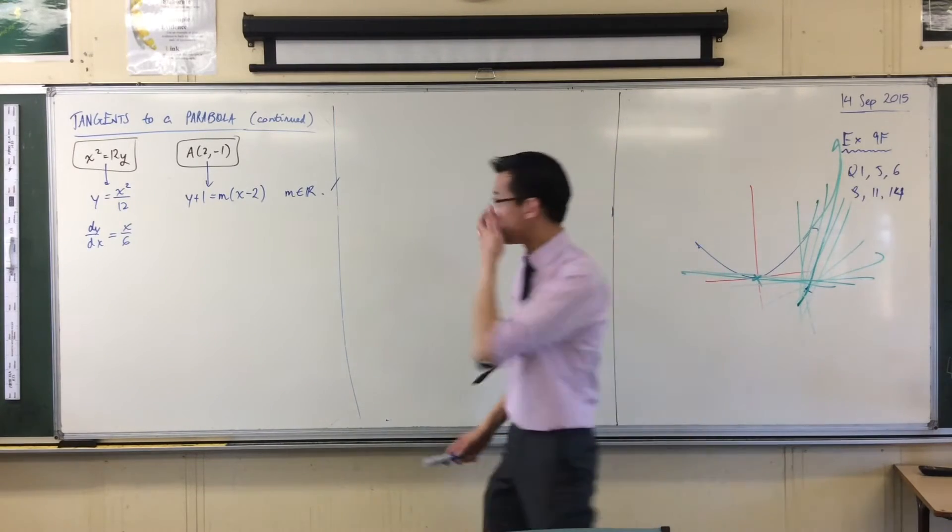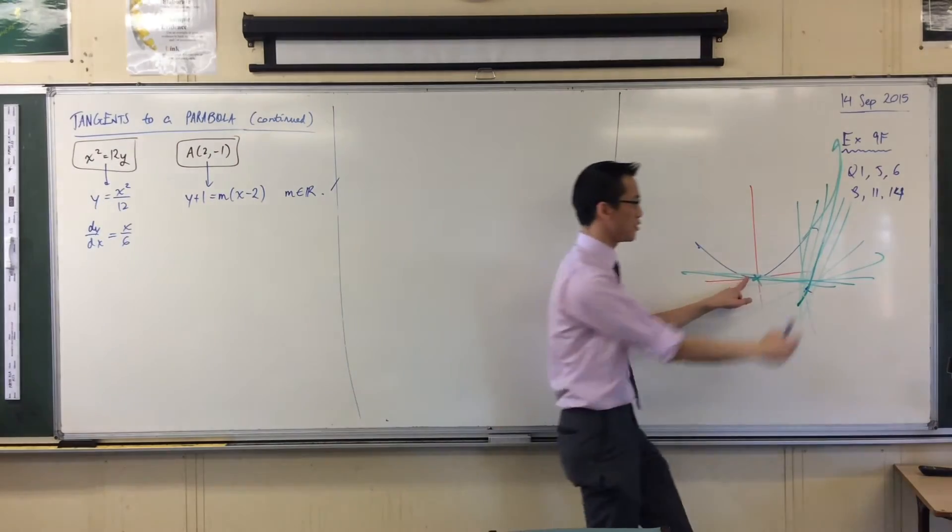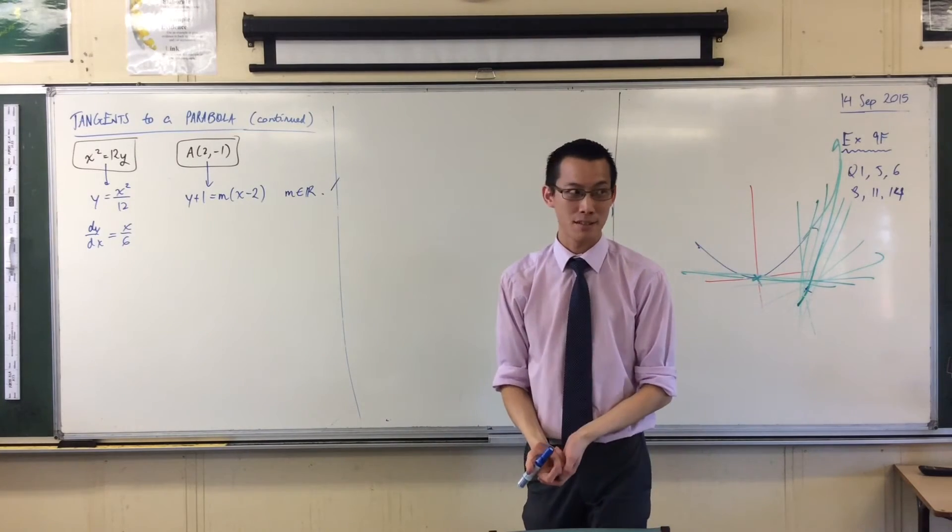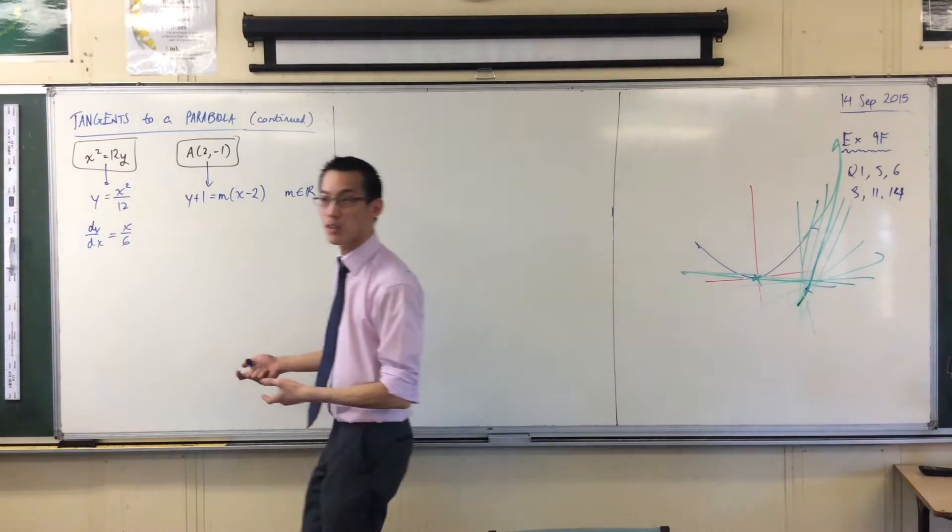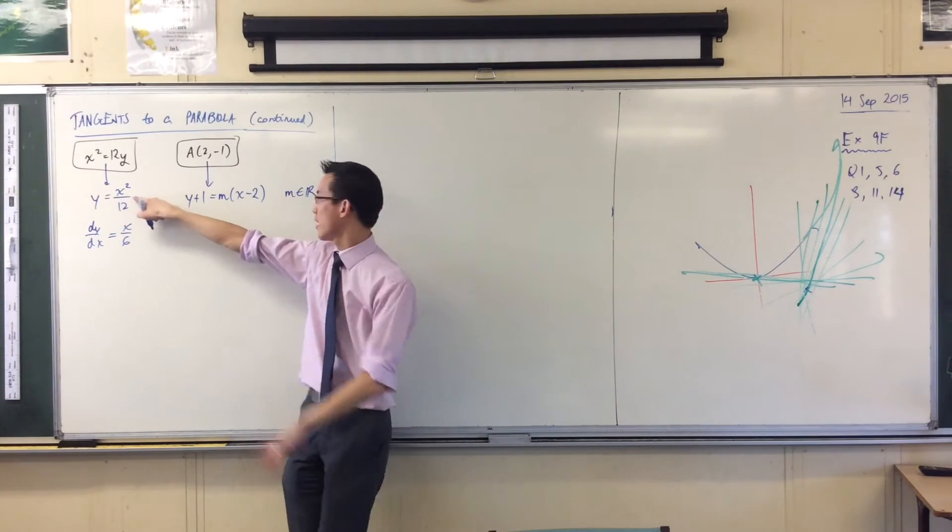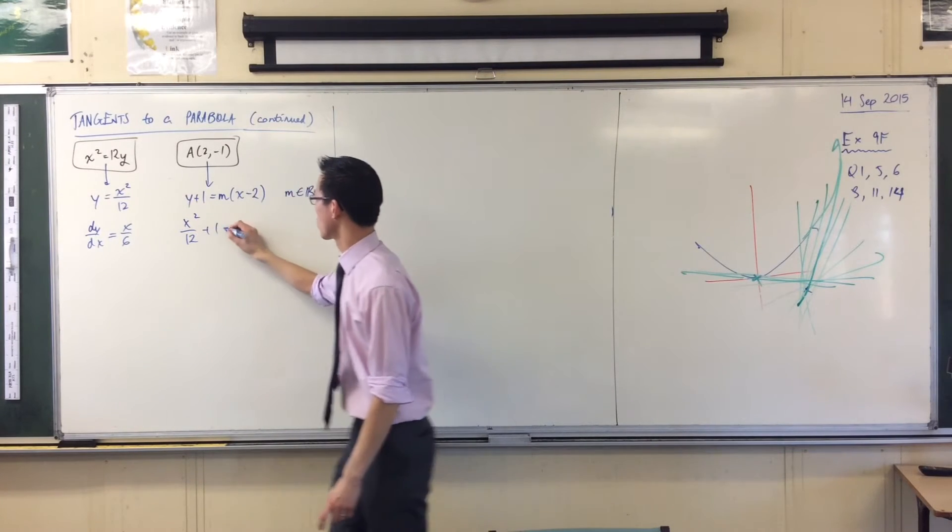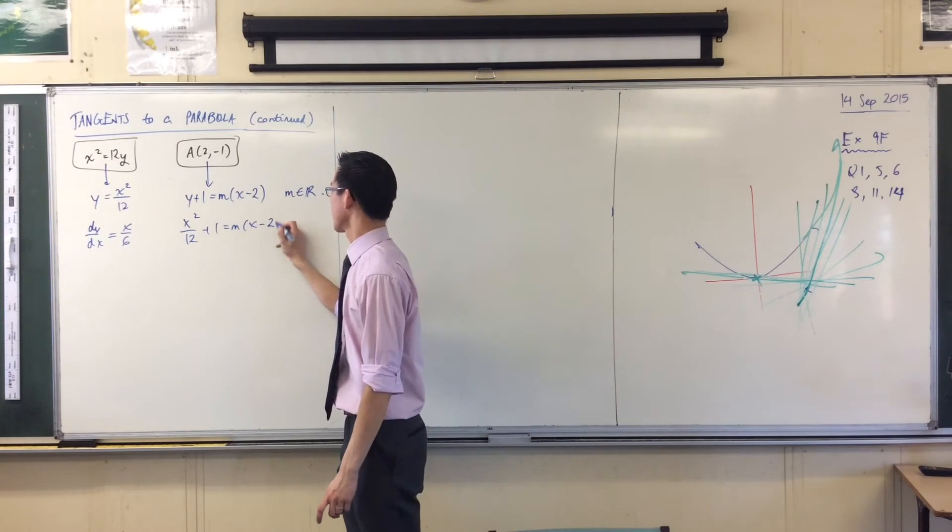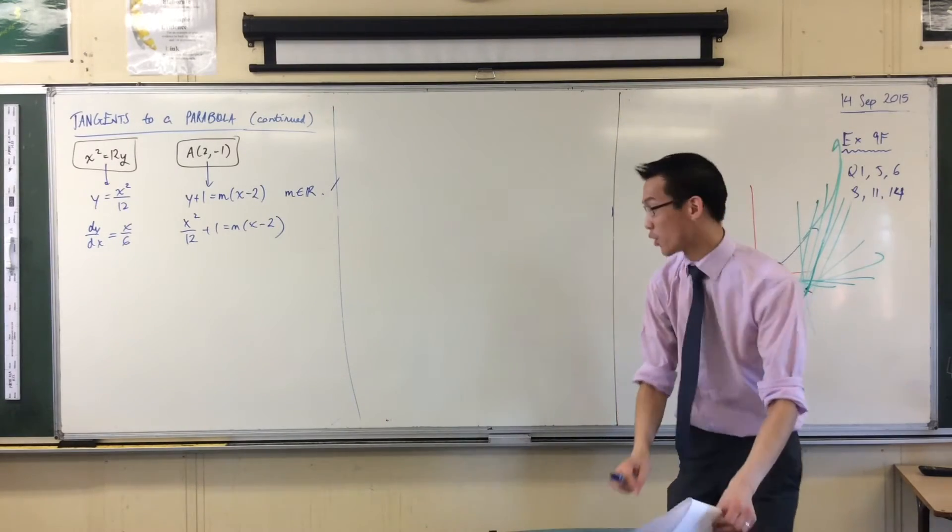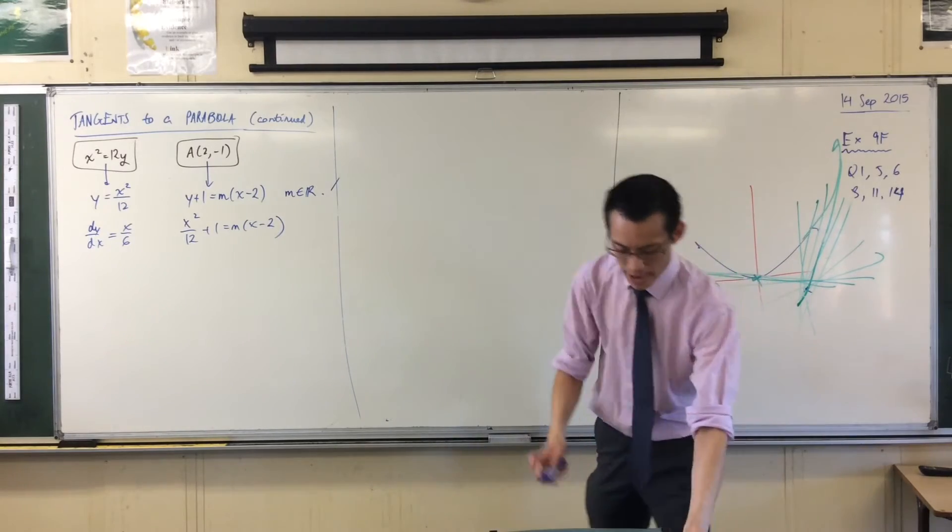So, to do that, all I know apart from this is the equation of the parabola, and I want them to intersect. So, how do you do things when you're trying to solve when things intersect? You make them equal. You solve simultaneously. That is why I made Y equal to Y the subject over here, because then I can just chuck it in right there, right? X squared on 12 plus 1 gives me that, okay?